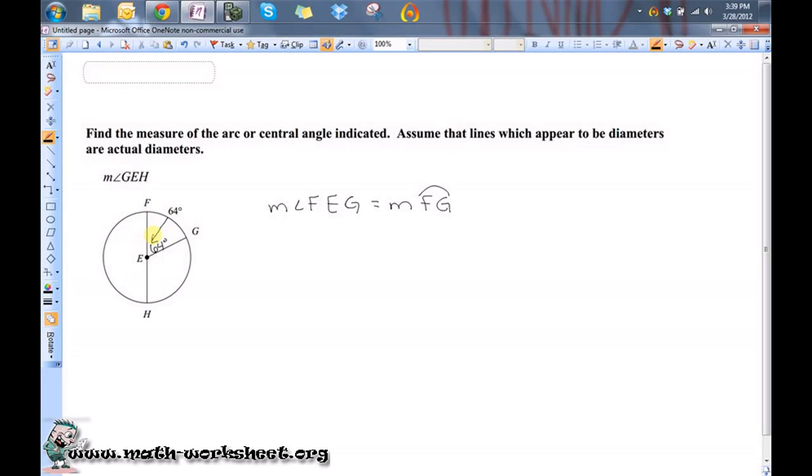Okay, so that means the measure of angle—well, this is 64 degrees, might as well write that there. So the measure of angle FEG plus the measure of angle GEH is equal to 180 degrees.